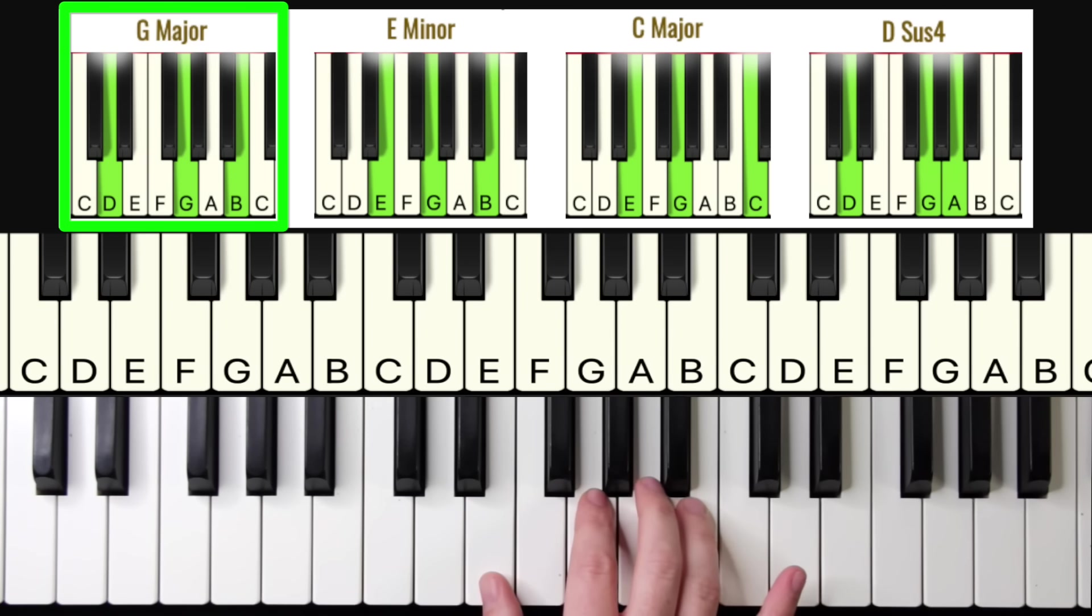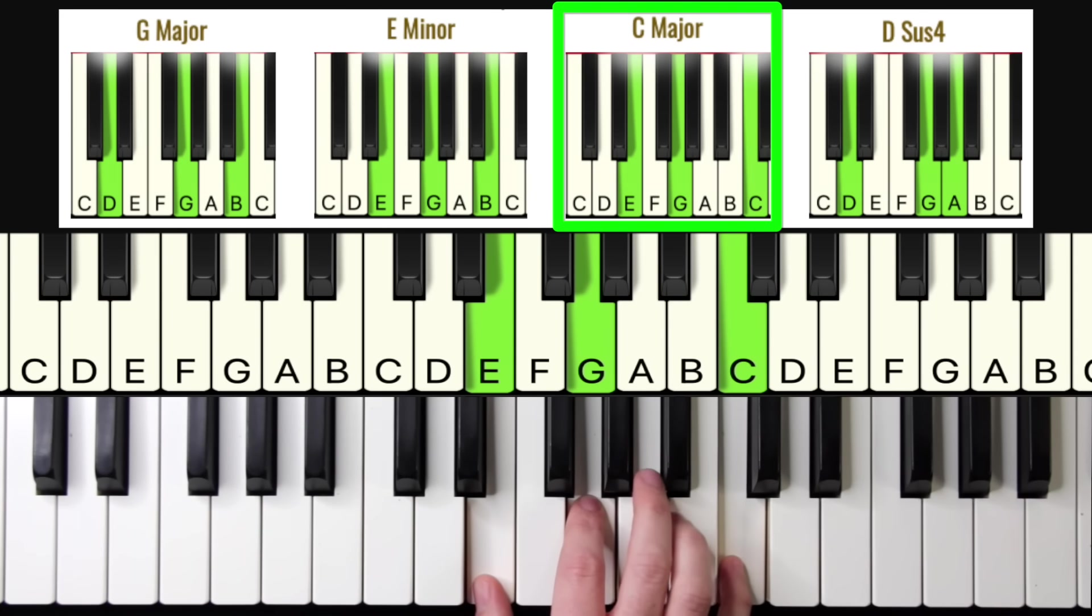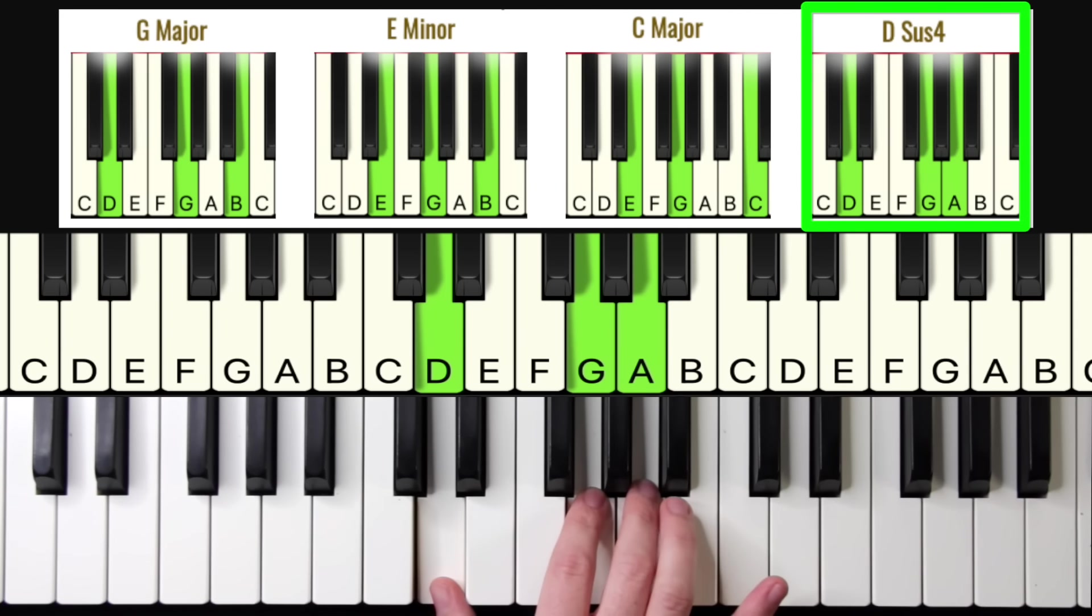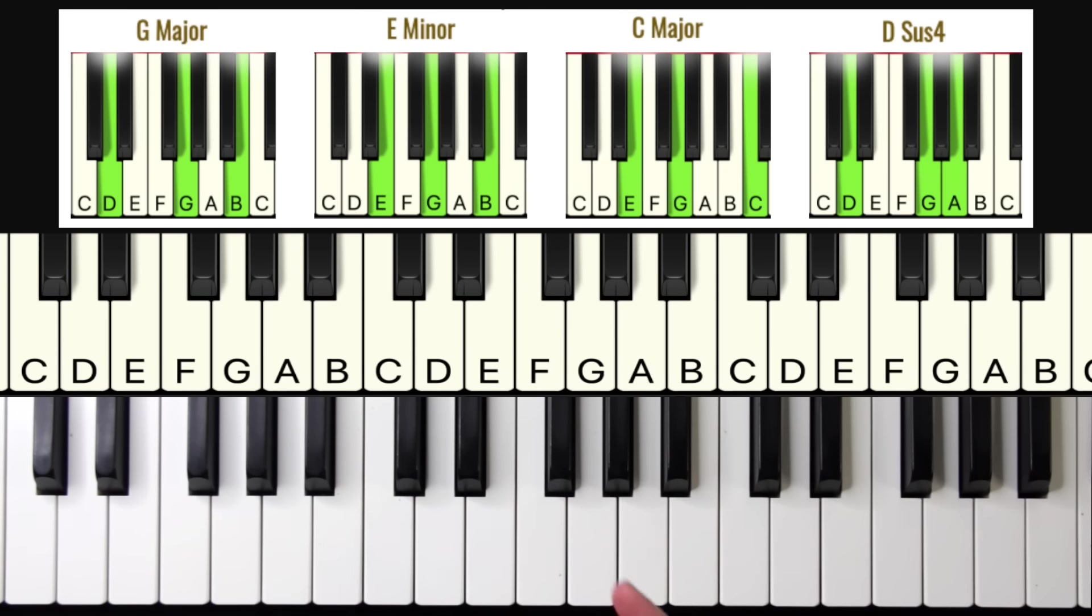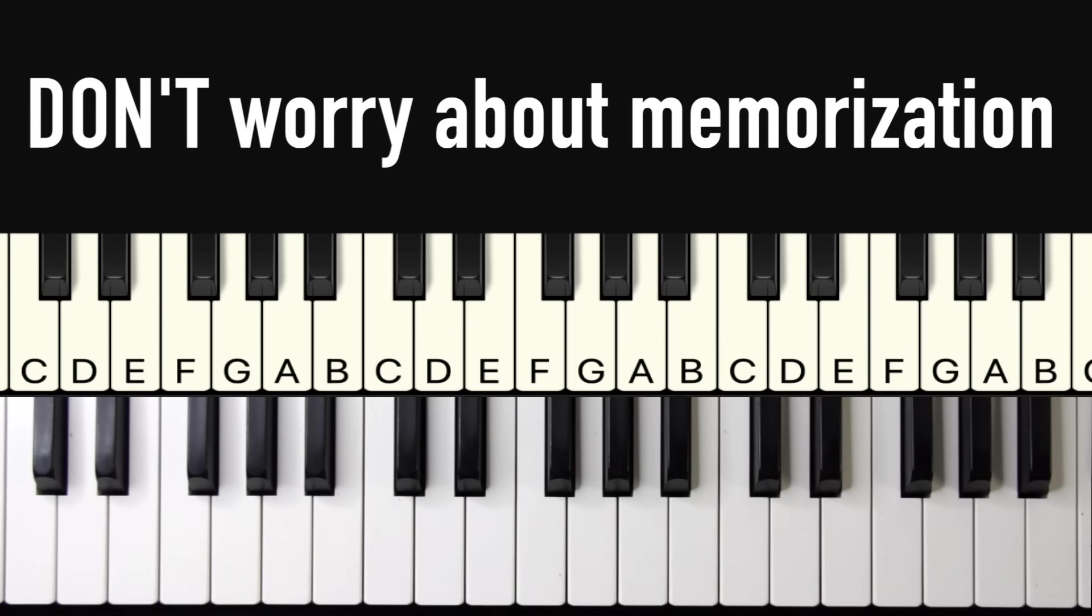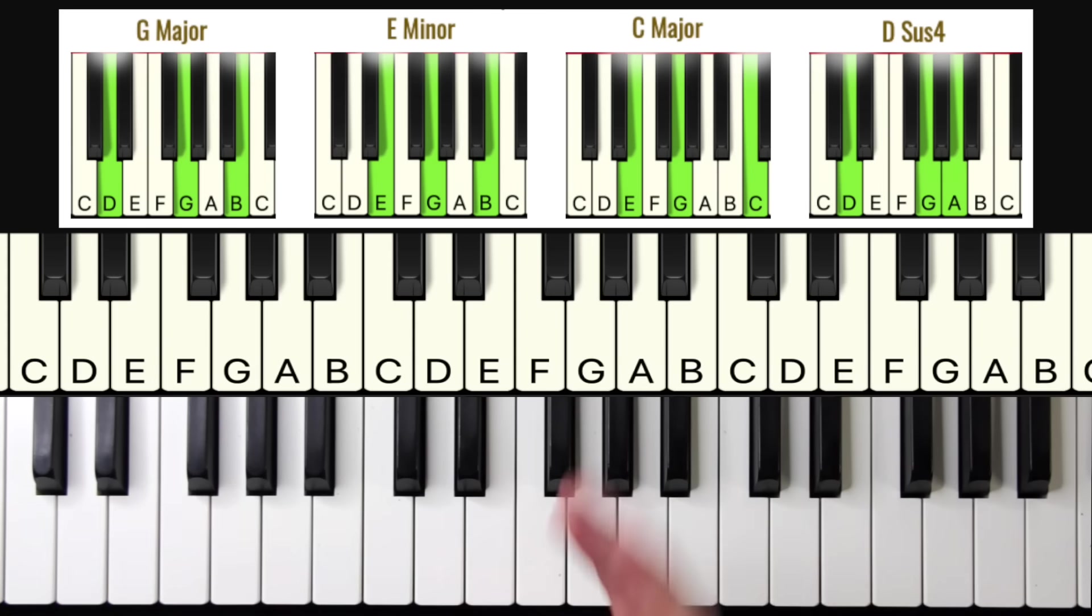And then E minor, then C major, and then D sus four. And we simply repeat these four chords over and over throughout the entire song. By the way, don't worry about memorizing these. I'm going to have a cheat sheet for you guys later on in the video.